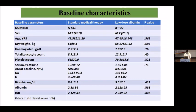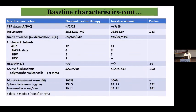Baseline parameters are comparable. The age is around 50 years, hemoglobin 8, total leukocyte count 9. Baseline serum creatinine in both arms is around 1.9, bilirubin 8.4, INR 2.12, and sodium 128.18. Child-Pugh class C is the most common presentation, with alcohol as the most common etiology in both groups. Five patients in the standard medical therapy arm have grade 1 hepatic encephalopathy versus seven patients in the low dose arm. Almost 100% of patients are on diuretics, with a median furosemide dose of 20 mg and spironolactone 75 mg.